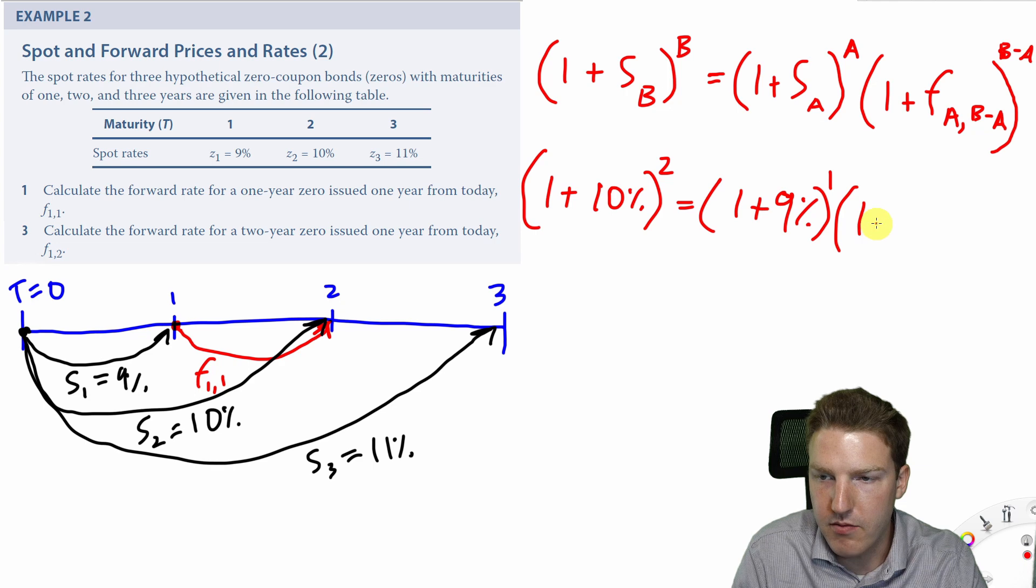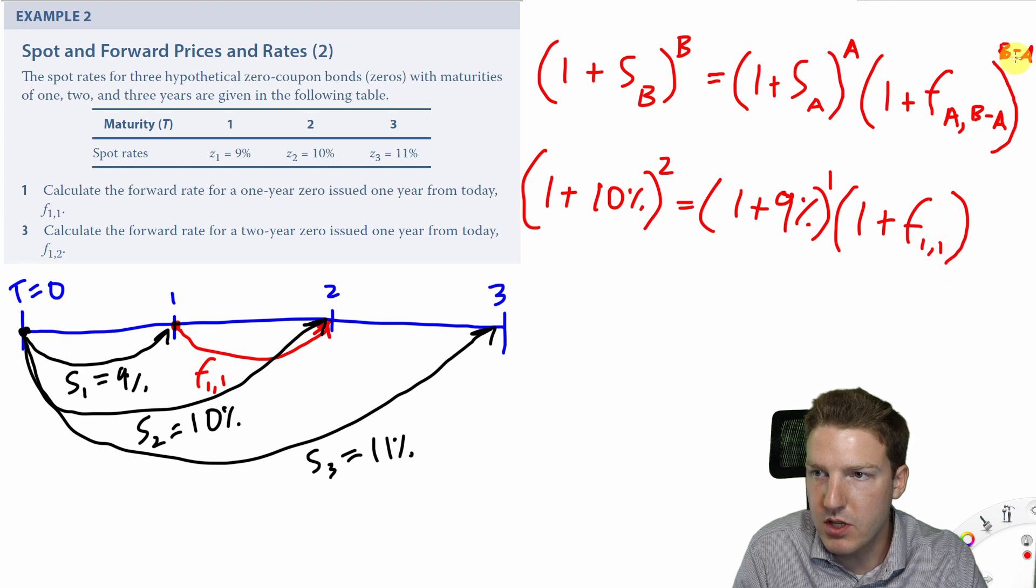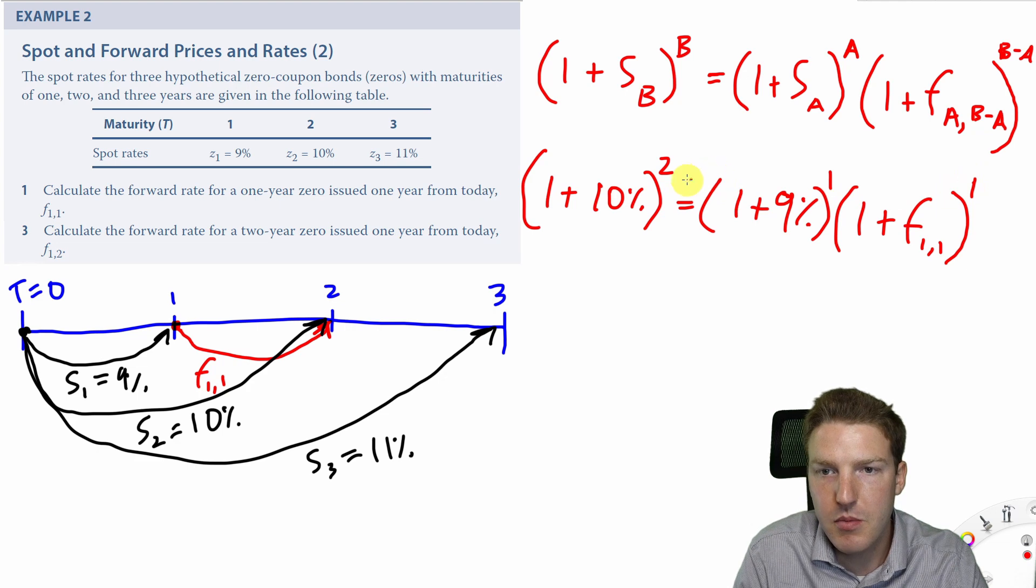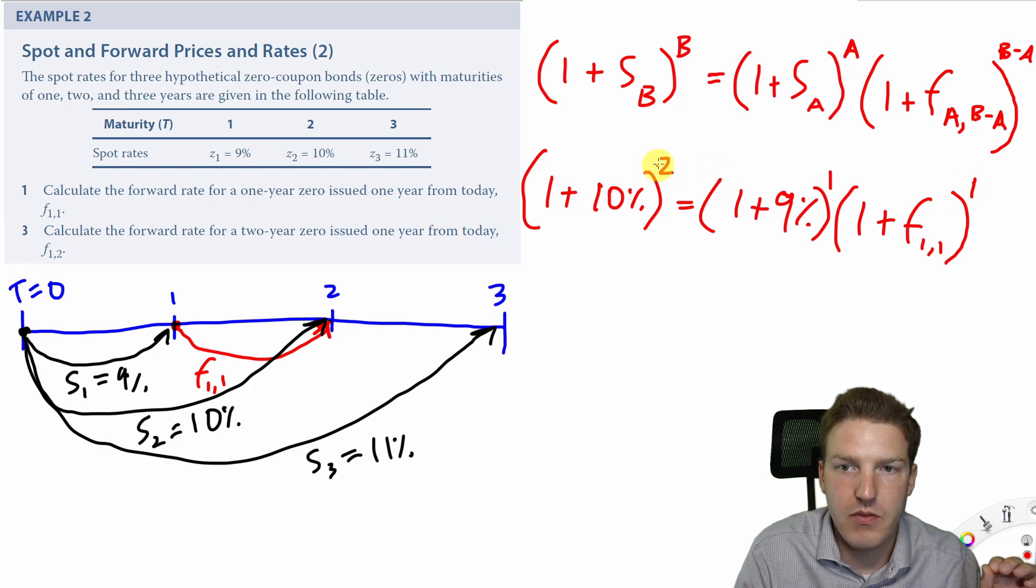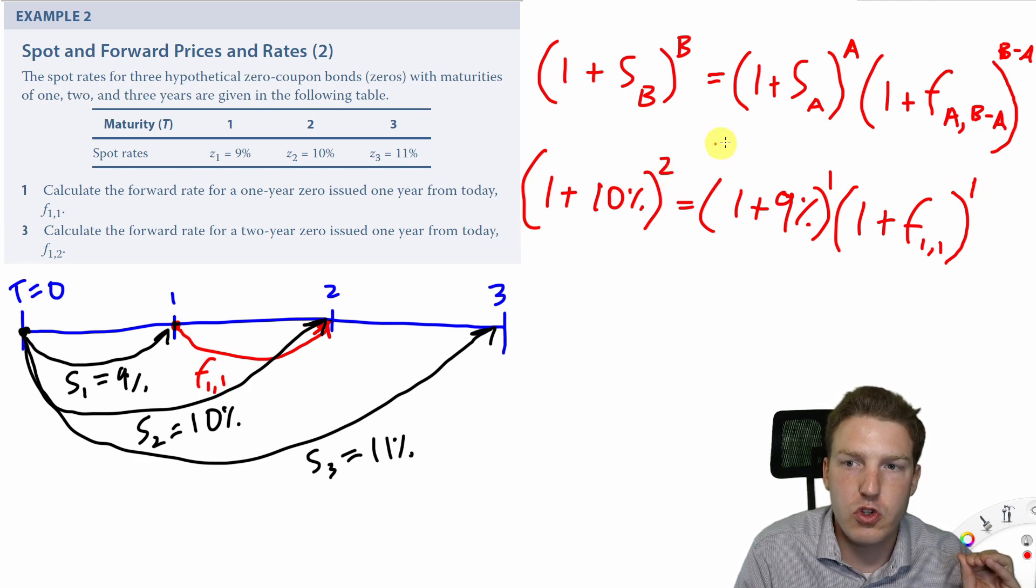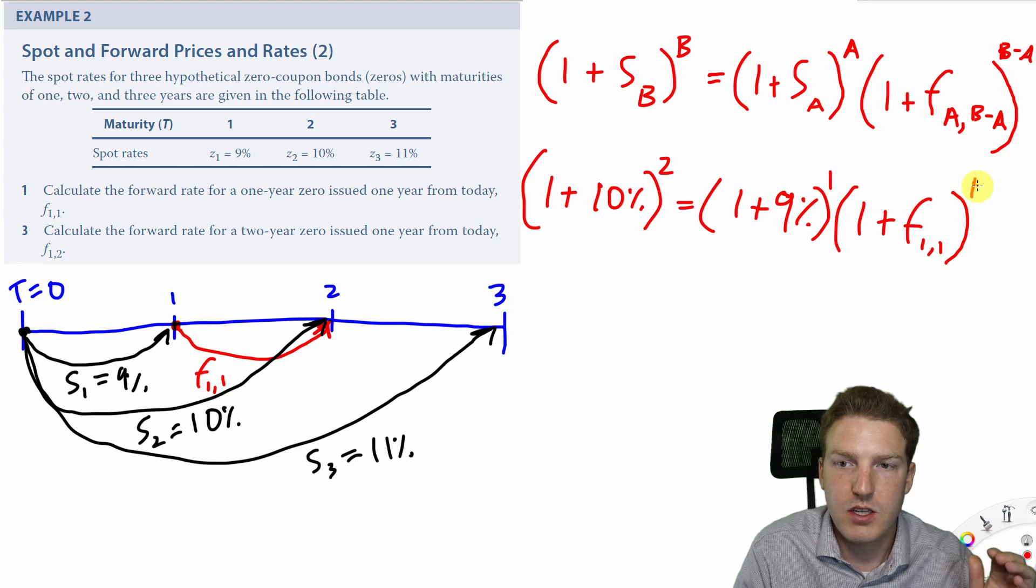And we can use this to find that forward rate, which is 1 plus F1, 1. And then the exponent is actually B minus a, which is 2 minus 1, which is just 1. One thing to keep in mind is that the total sum of the exponents on the left side of this formula should always be equal to the total sum of the exponents on the right side.